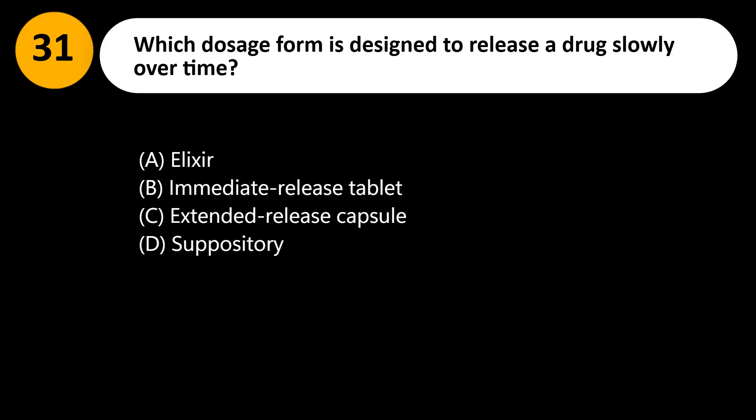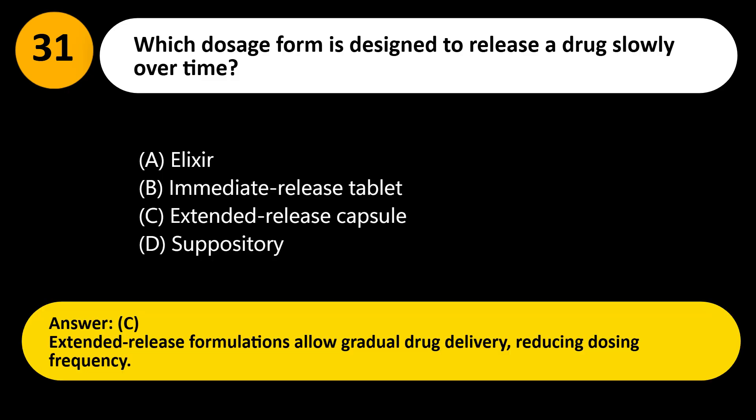Which dosage form is designed to release a drug slowly over time? A. Elixir. B. Immediate release tablet. C. Extended release capsule. D. Suppository. Answer: C. Extended release formulations allow gradual drug delivery, reducing dosing frequency.